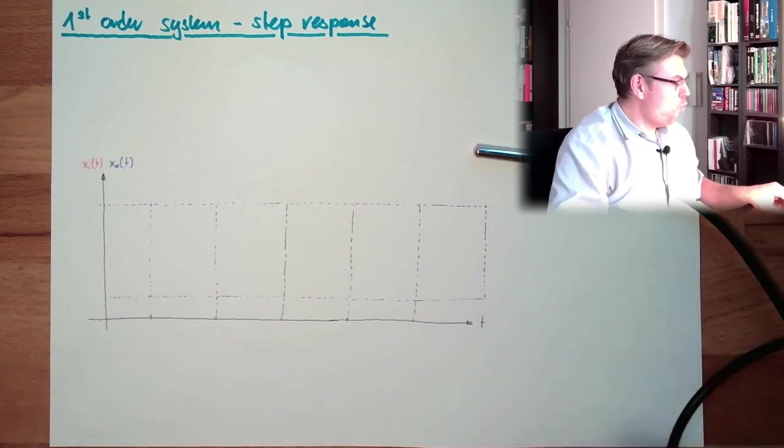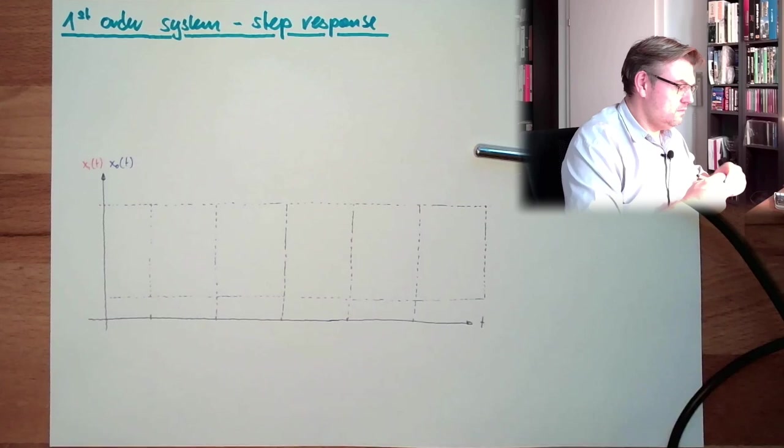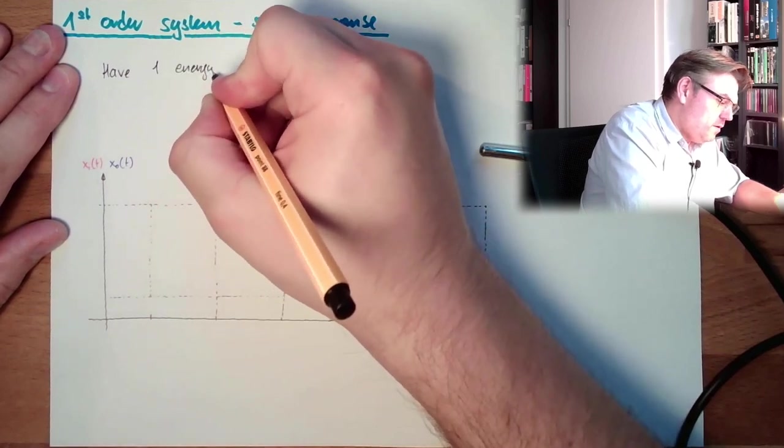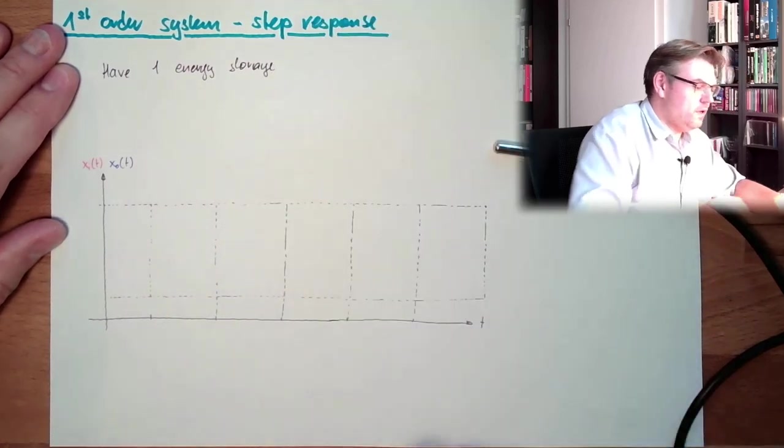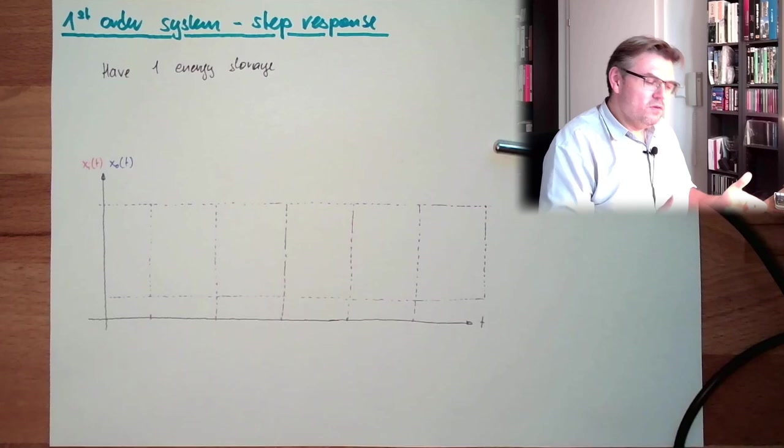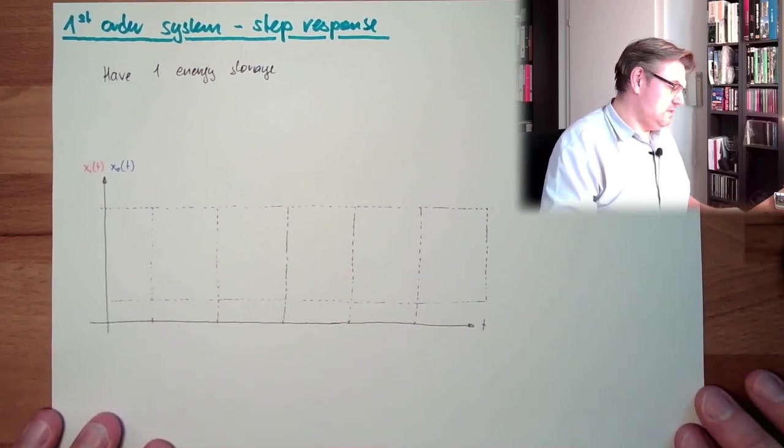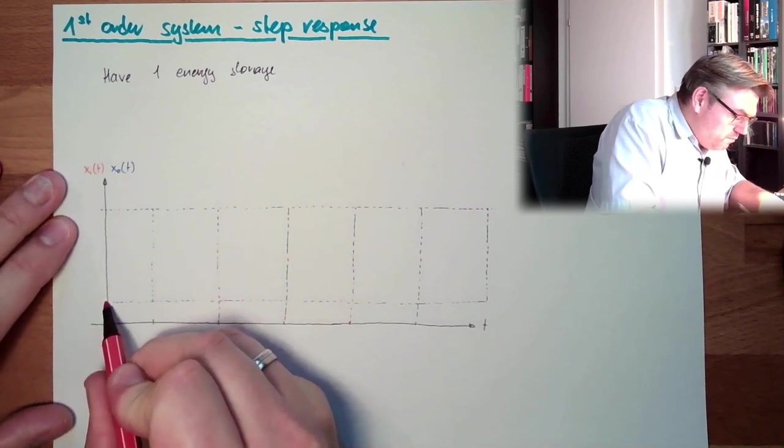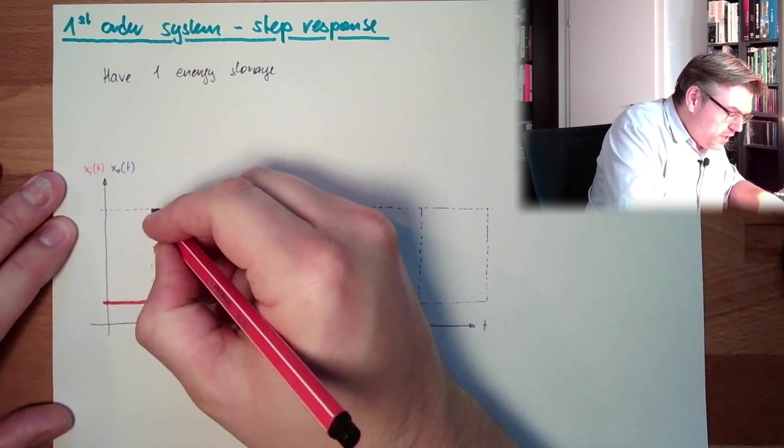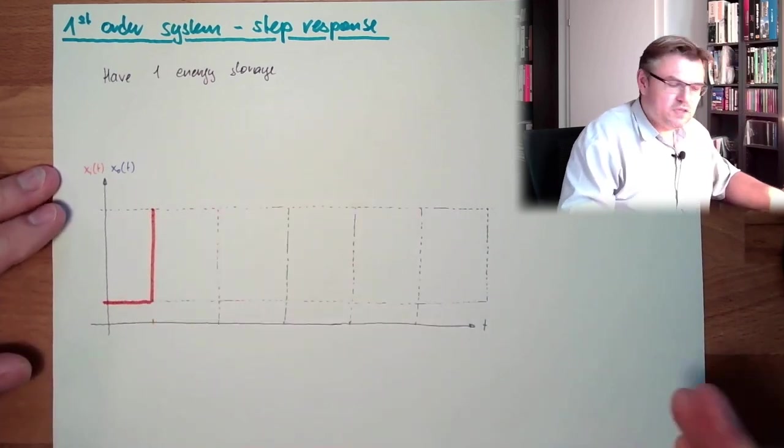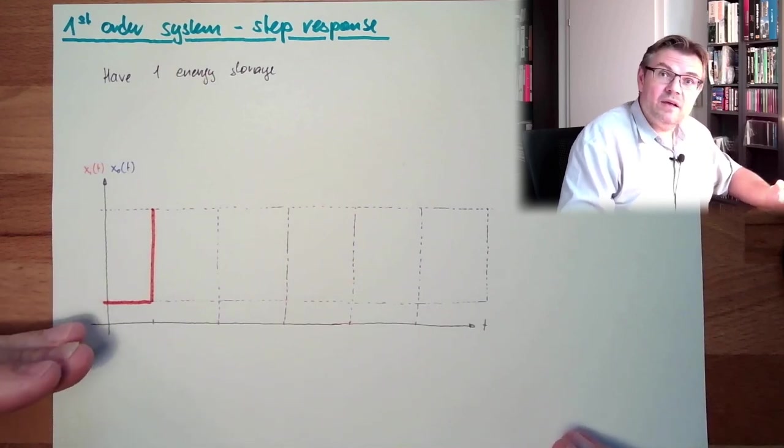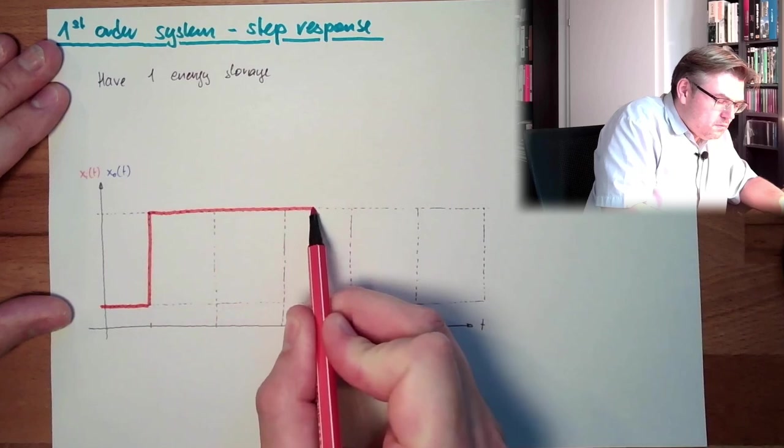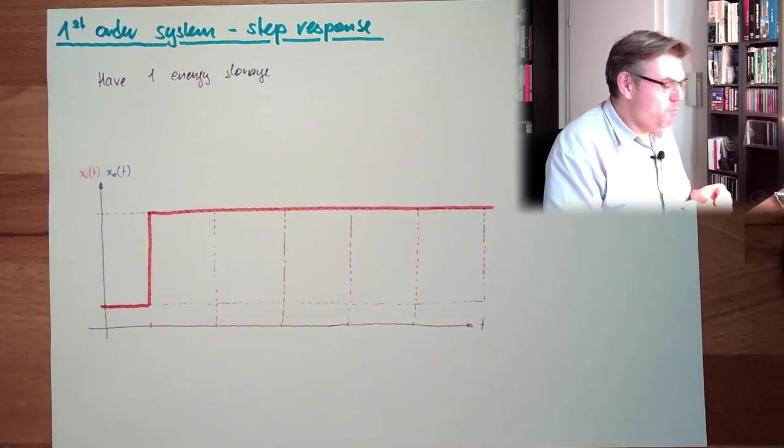First-order system has one energy storage. And I need to fill up this energy storage. And now we want to see what is the response of a first-order system on a step. So actually, our input value will have a certain value, then this value will change. As an example of our temperature sensor, it would be I am inside, air conditioned, and then I will go outside and have 40 degrees in summer. This is our input.